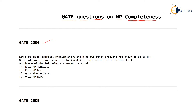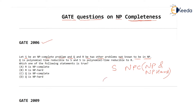The question says that let S be an NP complete problem. So S is NP complete, which means S is both NP and NP hard. The other statement they have made is that Q and R are two other problems not known to be in NP. So Q and R are definitely not NP problems. They are not claiming anything other than this — Q and R do not belong to the set of NP class problems.